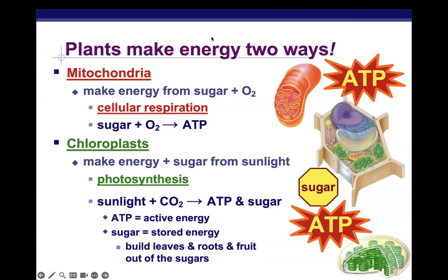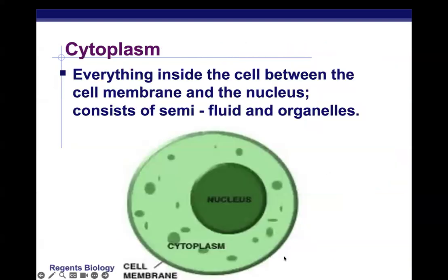Plants make energy two ways: they use mitochondria to break down organic molecules into ATP, but they also have chloroplasts, which harness sunlight energy and convert it into biomolecules through photosynthesis. Chloroplasts are used to take energy from sunlight and turn it into macromolecules.